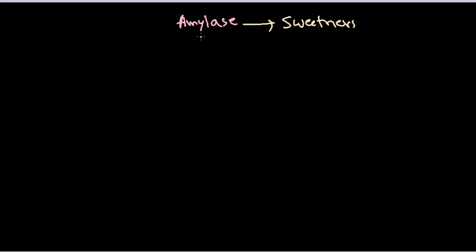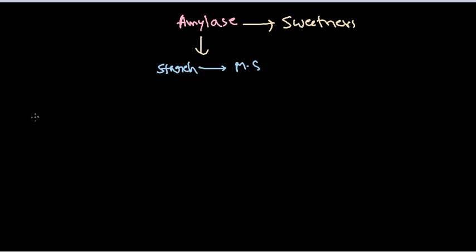The role of amylase is to break down starch into monosaccharides or small units of sugar which are readily available for uptake. Starch is a polymer of carbohydrates made up of glucose.